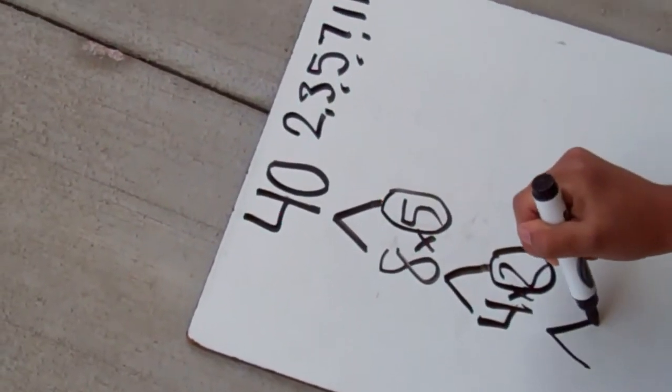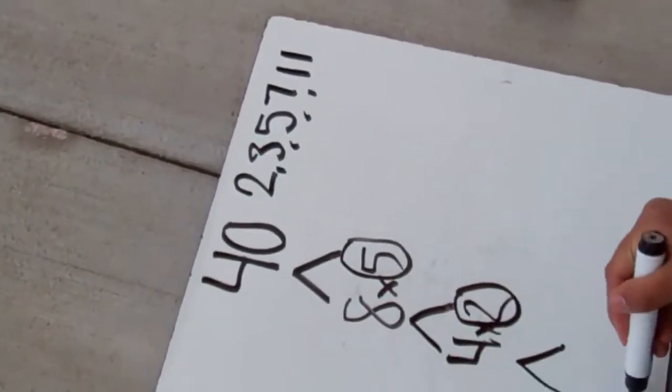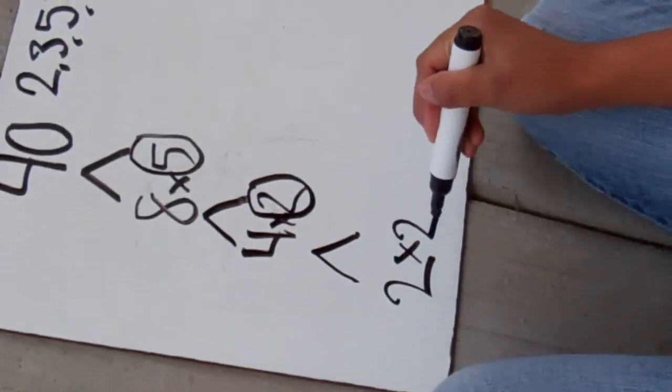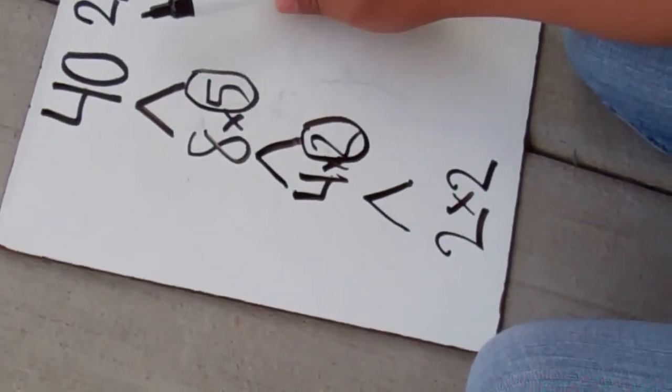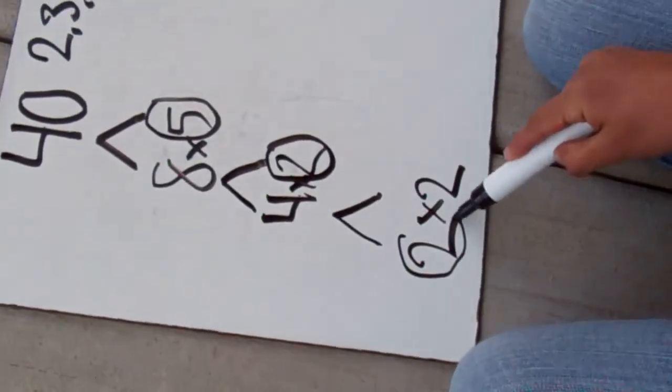So now I put the branch because there's not a prime number. Now I put two times two. Are any of these prime numbers? Well, let's check. There's two, three, five, seven, eleven. Is there two? Yes. So they're both prime numbers.